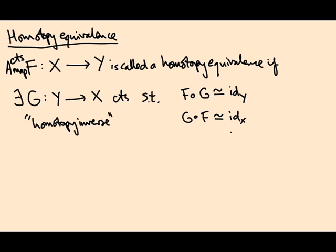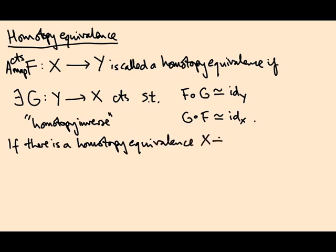In other words, you almost have that F composed G is the identity but you only have it up to homotopy. You almost have that G composed F is the identity but you only have it up to homotopy. So if there exists a homotopy equivalence from X to Y then we say X and Y are homotopy equivalent.